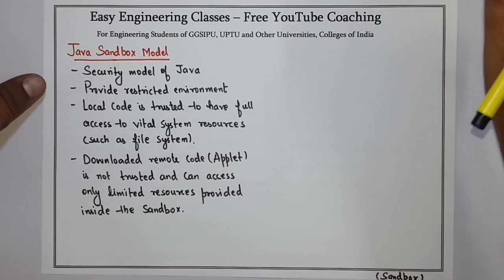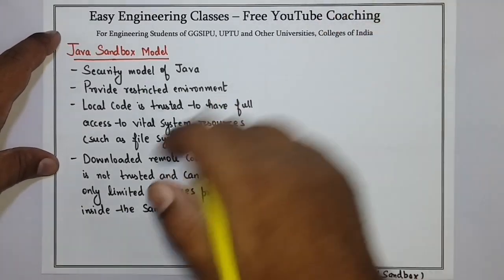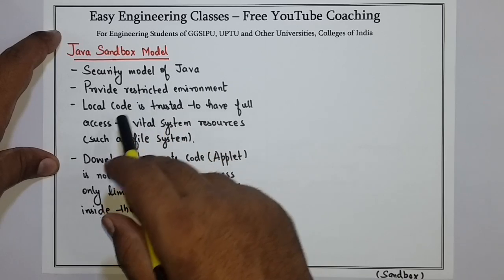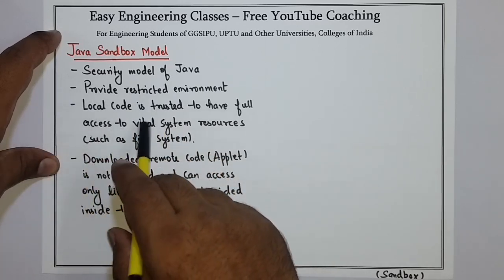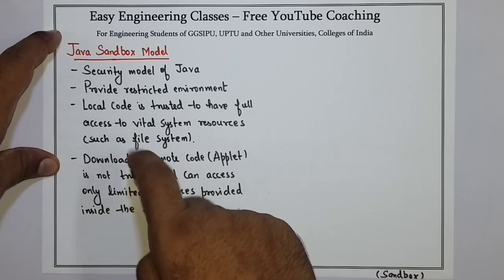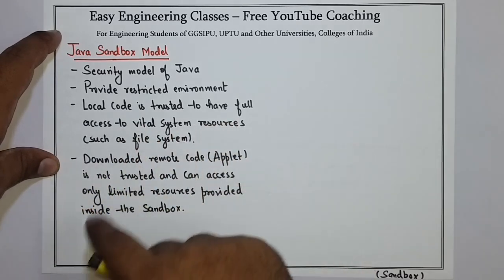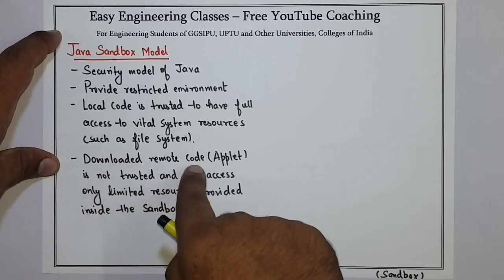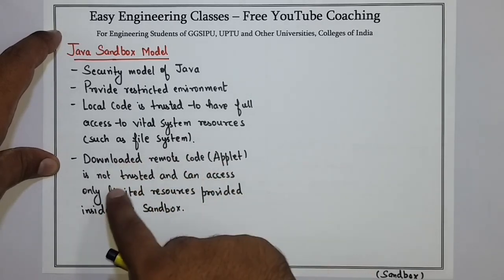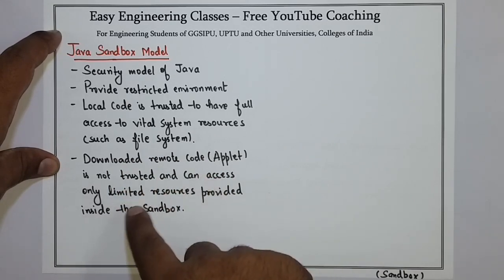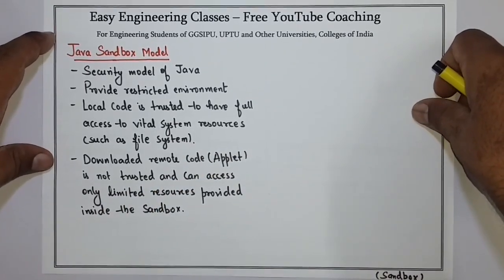The importance of the Java Sandbox model is in security, because it provides a restricted environment. Local code is trusted to have full access to vital system resources such as the file system. Downloaded remote code such as an applet is not trusted and can access only limited resources provided inside the Sandbox.